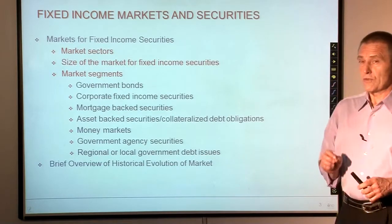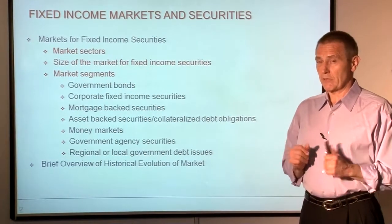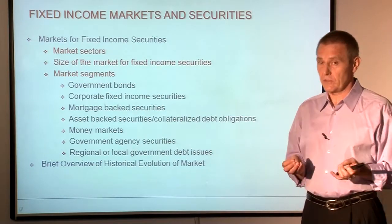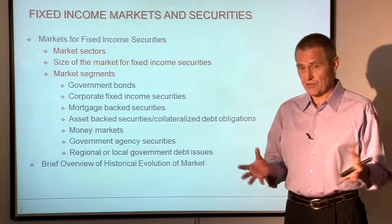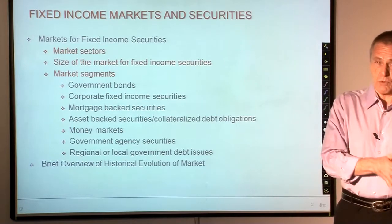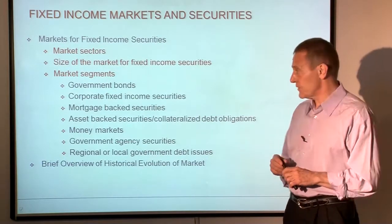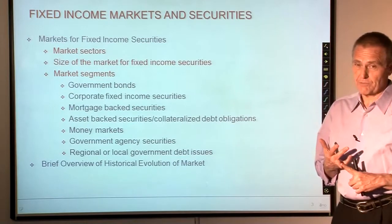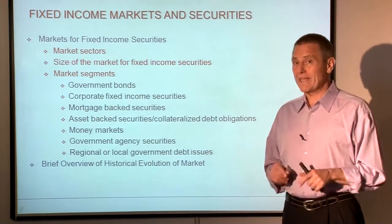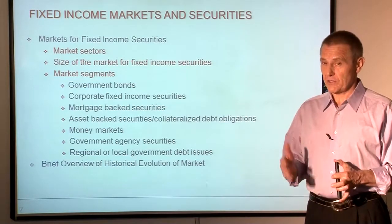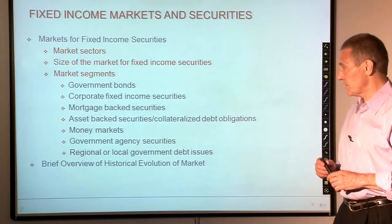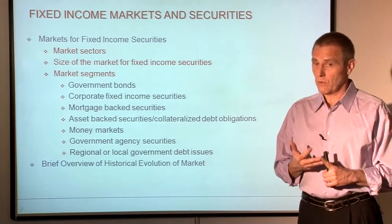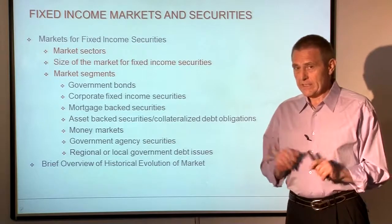There are also markets for what are sometimes called structured securities in the aggregate — because unlike other obligations which represent the borrowing of a single issuer, these structured securities usually represent packages of credit instruments. These could be mortgages, credit card receivables, auto loans, or a variety of other things, and include mortgage-backed securities, asset-backed securities, and collateralized debt obligations. Money markets are the markets for short-dated debt securities of any issuer, generally defined as securities having a year or less to maturity from the date of issuance. And there are also government agencies and local or regional governments as additional issuers.